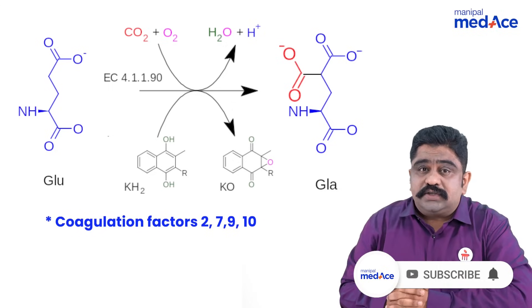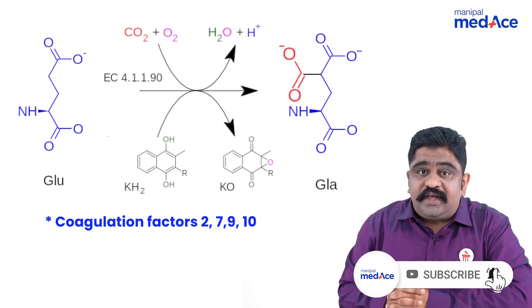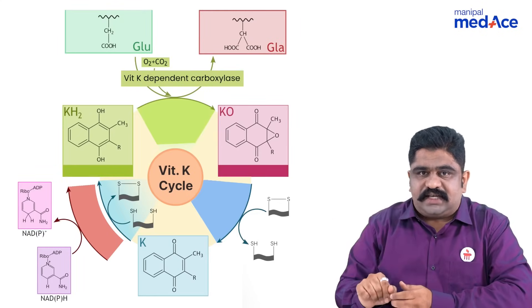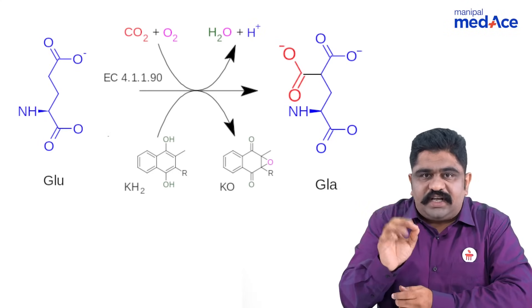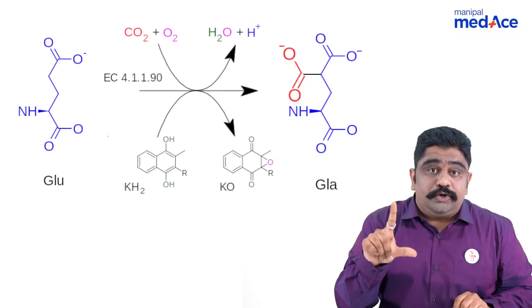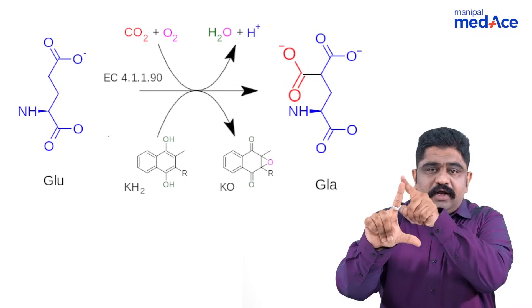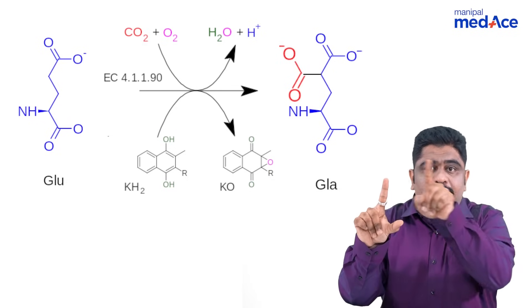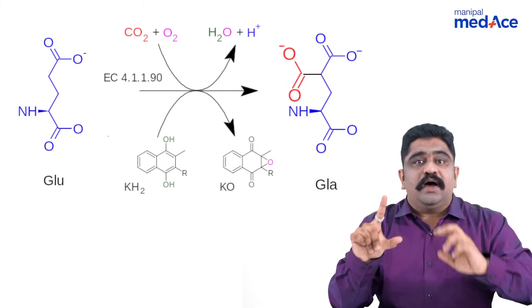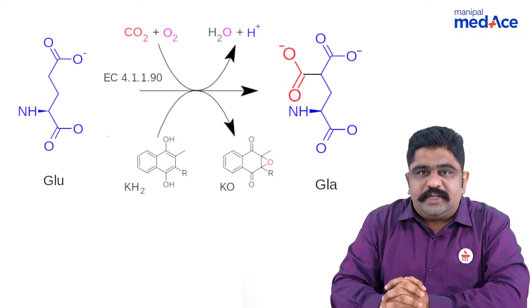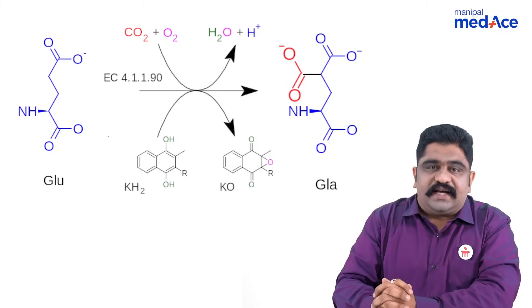These factors are capable of engaging calcium. When the vitamin K dependent cycle is happening, a vitamin K dependent carboxylase enzyme will cause gamma carboxylation of glutamic acid residues. Because of which, the glutamic acid residues will become GLA residues where you will have two carboxyl groups side by side. These two carboxyl groups will exert a negative charge, inside which a double positive calcium will come and bind. Once the calcium is engaged by the coagulation cascade, the coagulation cascade is a success.